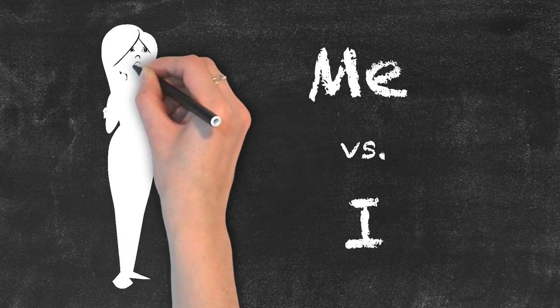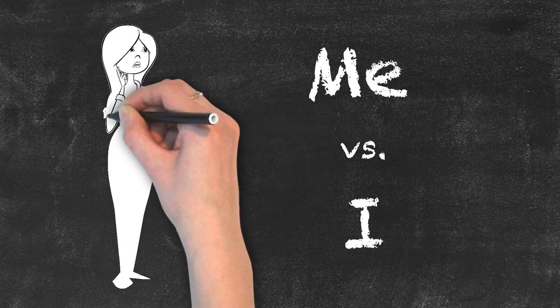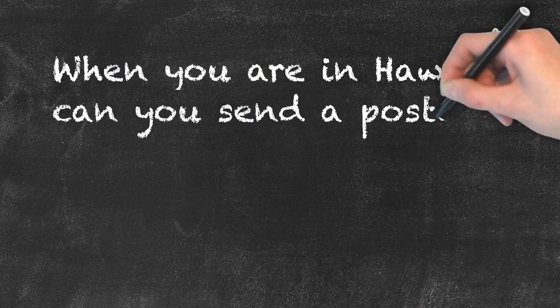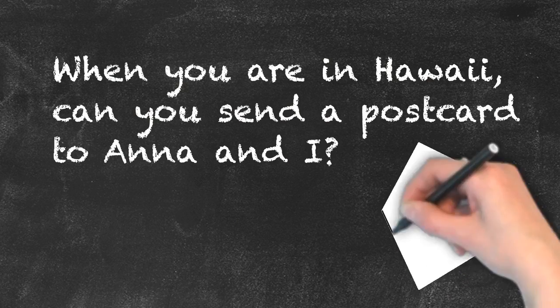Me versus I. We usually understand the difference of these two words, but when they're used in one sentence, things can get tricky and errors are made. Take this sentence: When you are in Hawaii, can you send the postcard